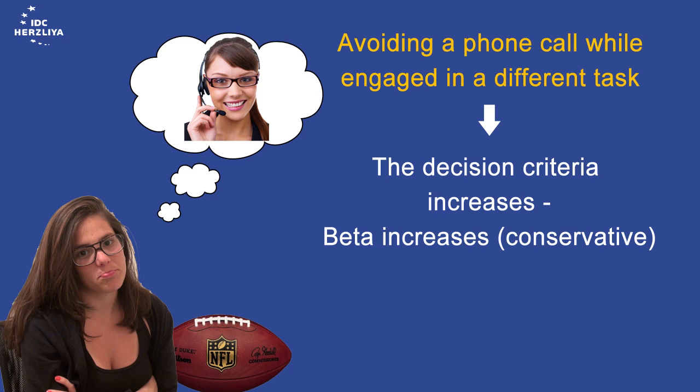Her decision criteria will increase. Her beta will increase. We can reasonably assume to find more misses, but more correct rejections.